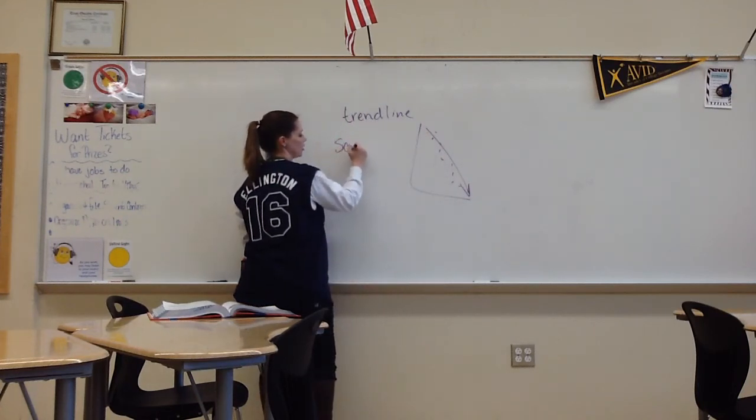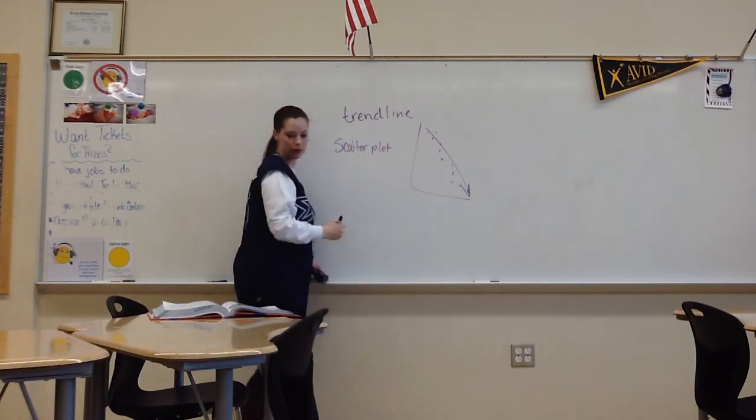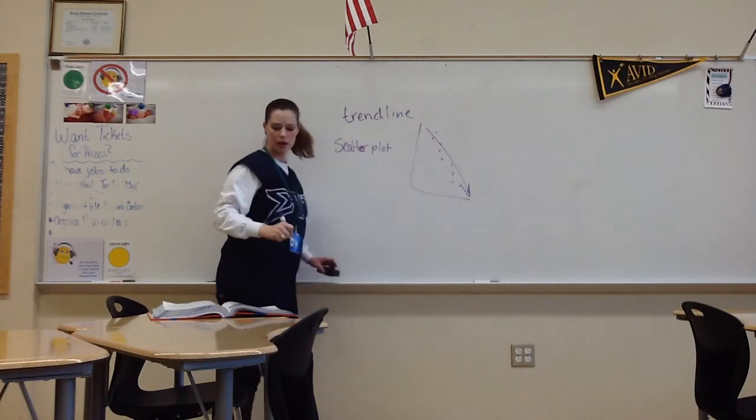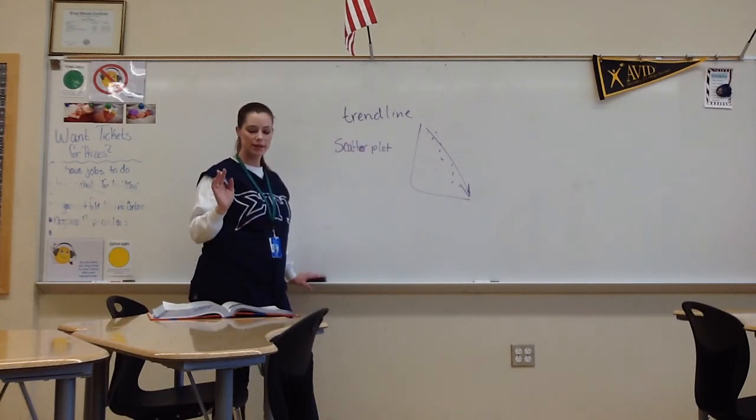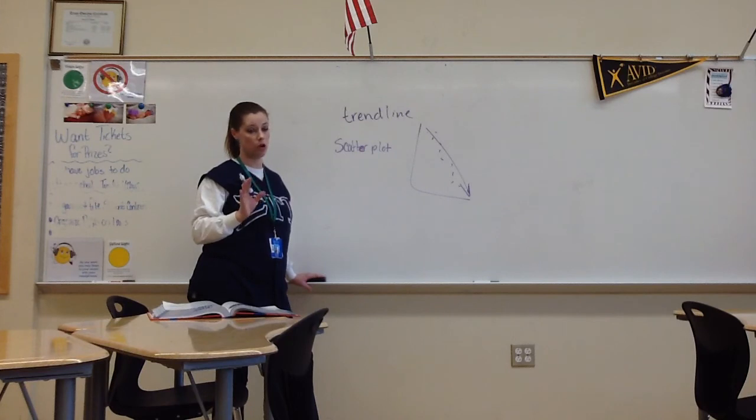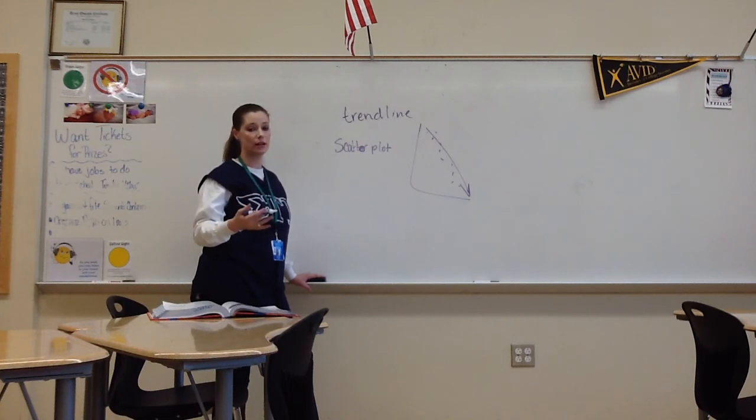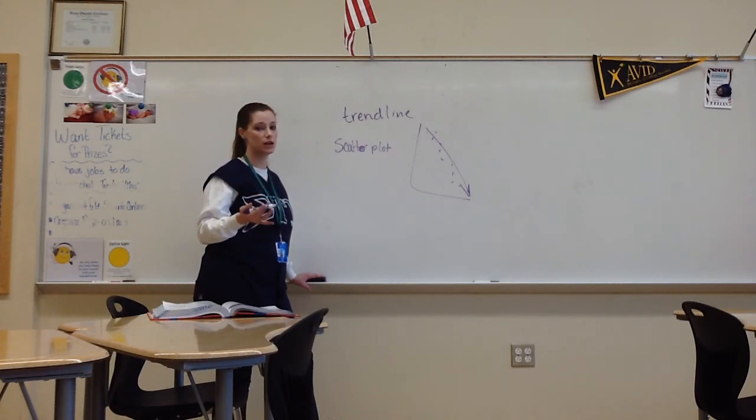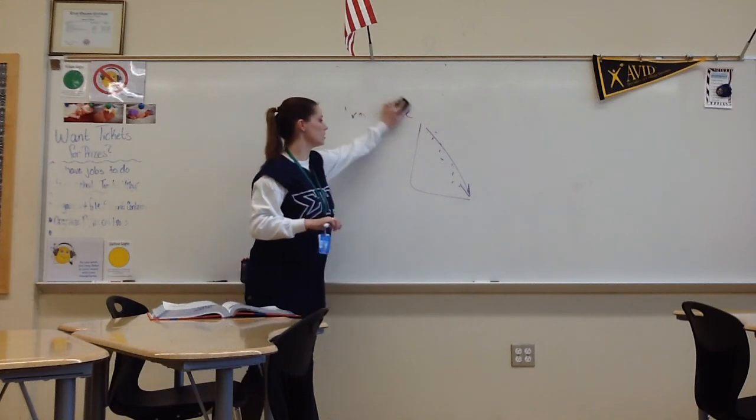And then you have scatter plot, which is what we're talking about. Misspelling today. Scatter plot. The actual textbook definition is a graph with points plotted to show a possible relationship between two sets of data. That's really annoying and long and hard to understand. Scatter plot is just a graph comparing two sets of data. A graph comparing two sets of data. That's the simplified definition. Have a good evening. That's it.